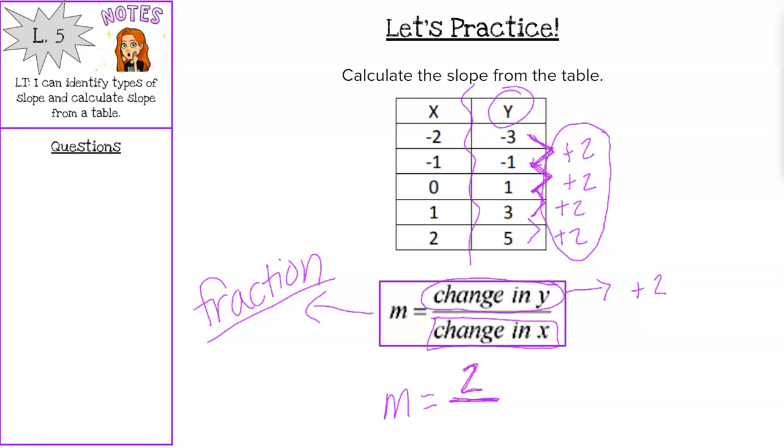Then we are going to do the same thing for our x values. Find that change in x. So how much would we need to add or subtract to get from negative two to negative one? We need to add one. Negative one to zero plus one, zero to one plus one, one to two plus one. So our change in x is positive one.